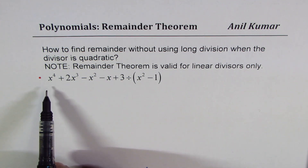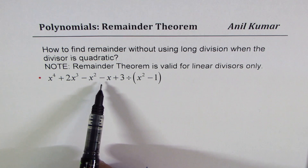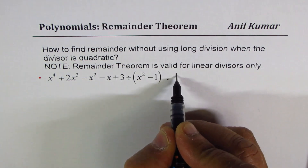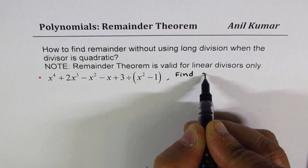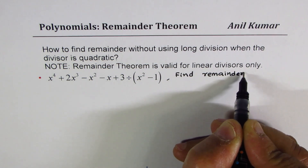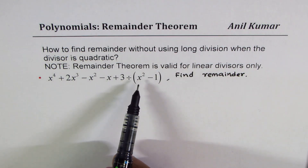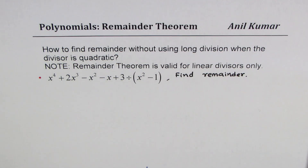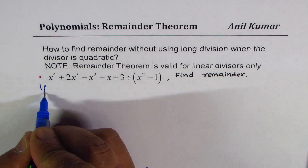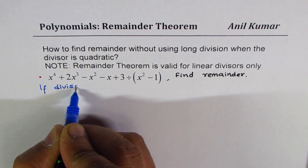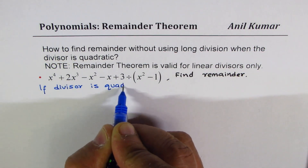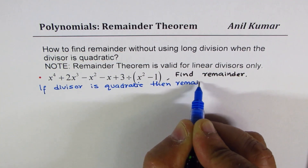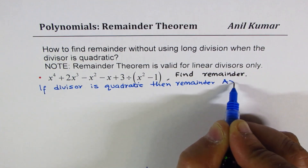The example before us is x to the power 4 plus 2x cubed minus x squared minus x plus 3, divided by x squared minus 1. We need to find the remainder. Now, if the divisor is quadratic, what kind of remainder do you expect?